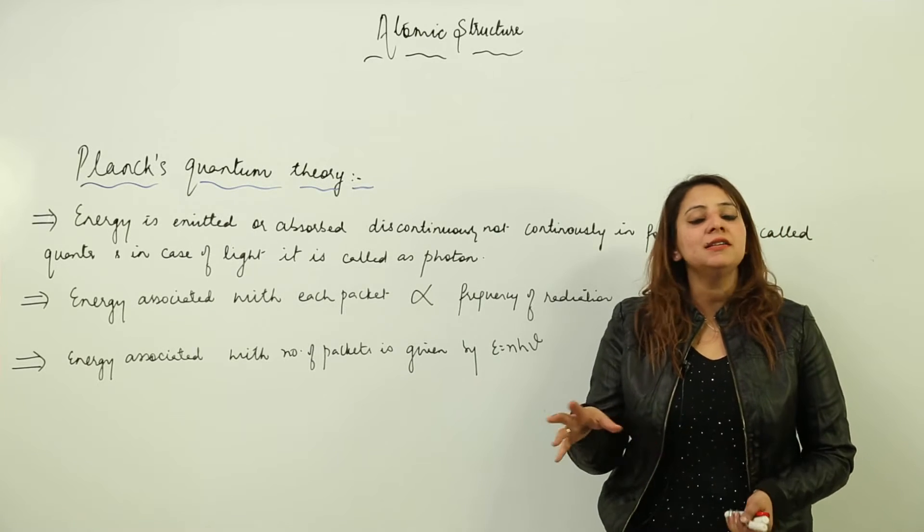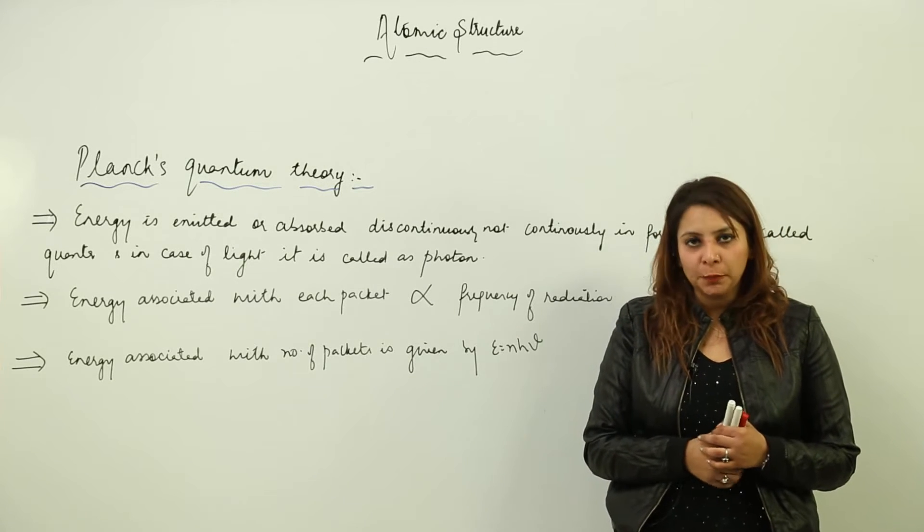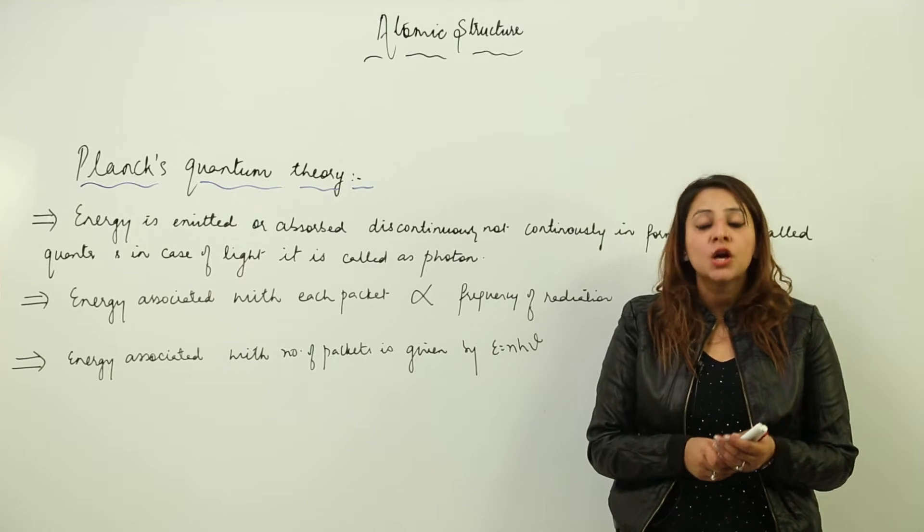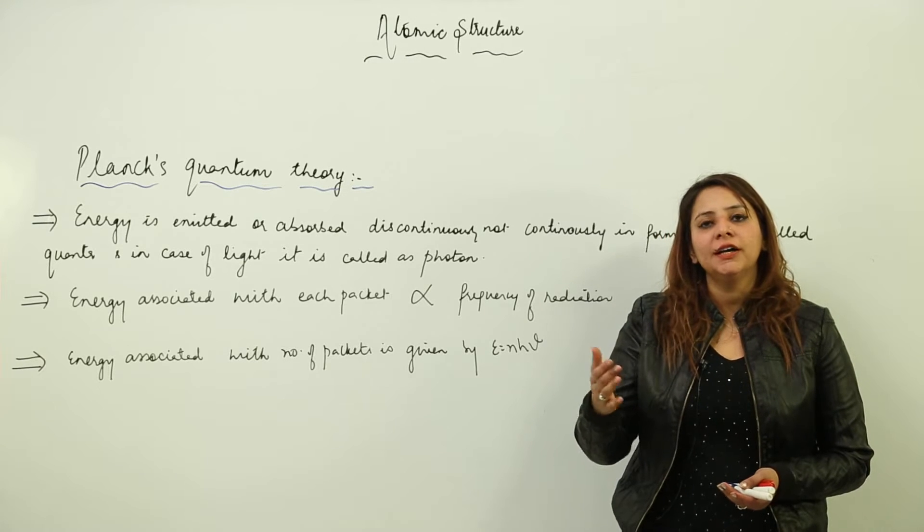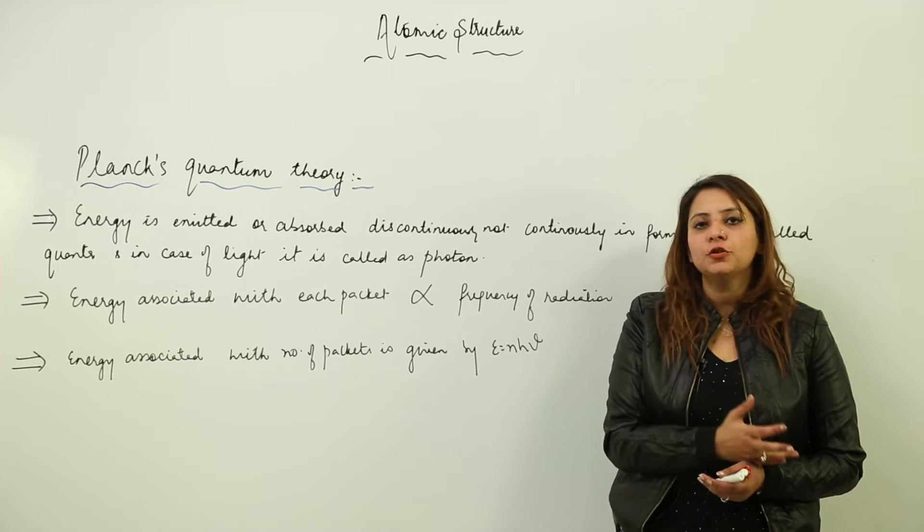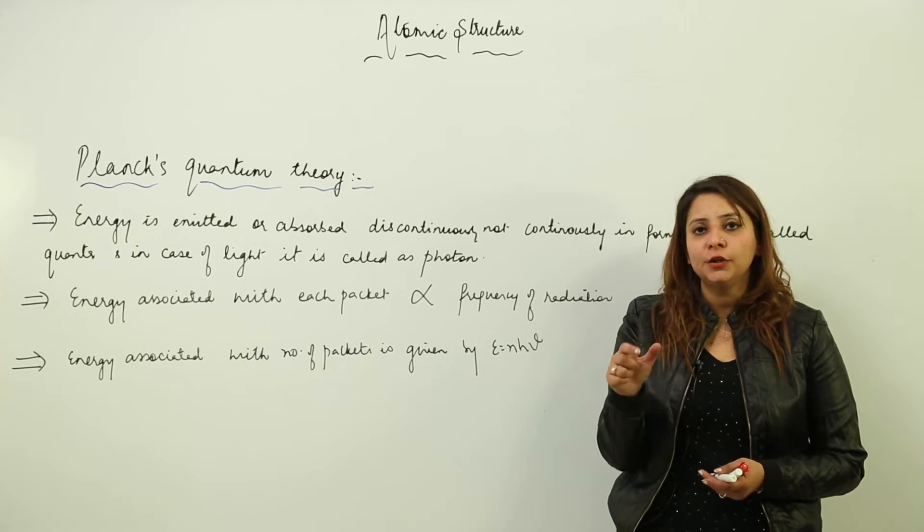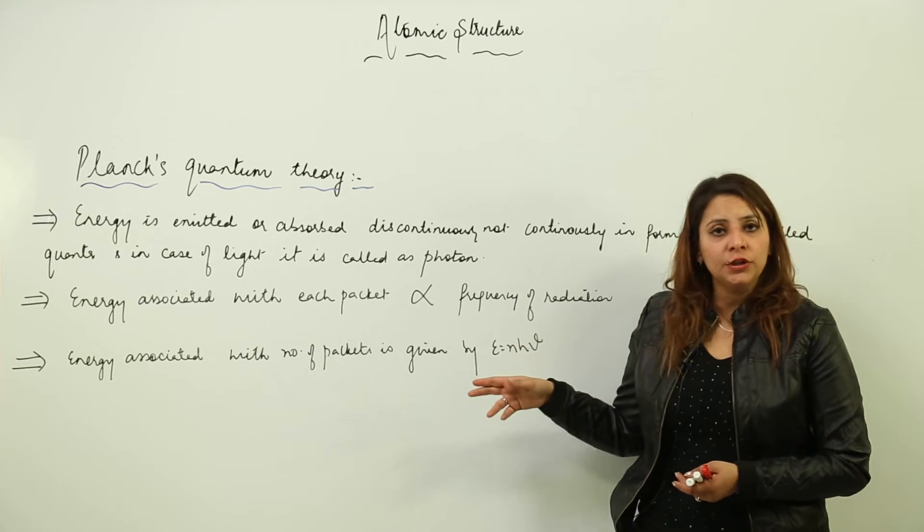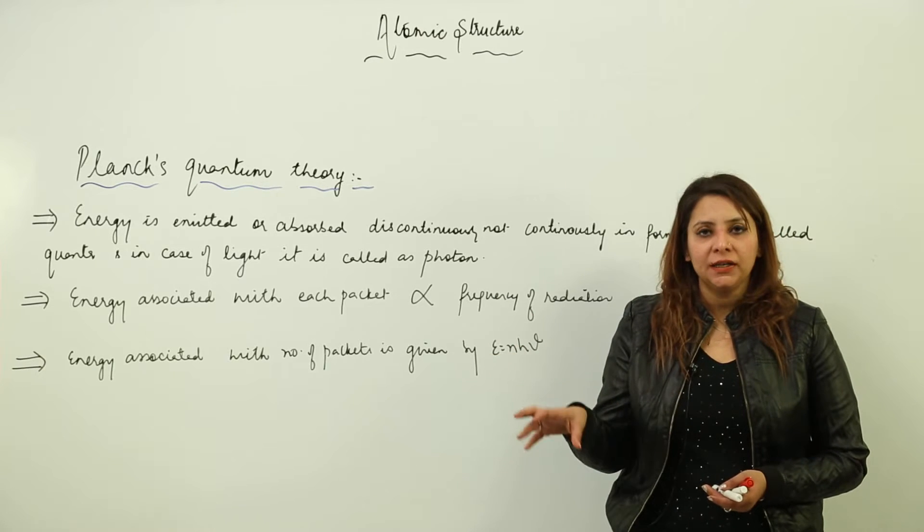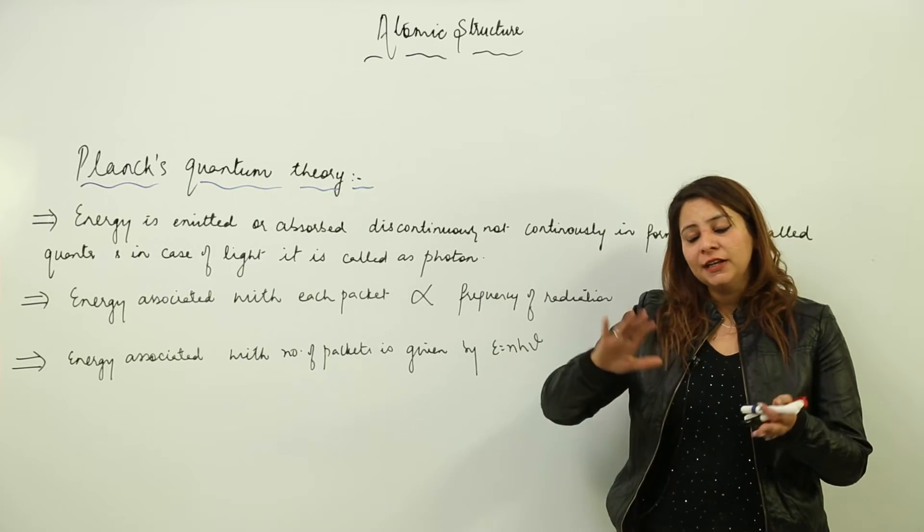Now you know that there are certain phenomena which could not be explained by electromagnetic wave theory. We have another theory according to which light is considered to be a wave. Now we have a new theory where we are going to consider light as a particle.